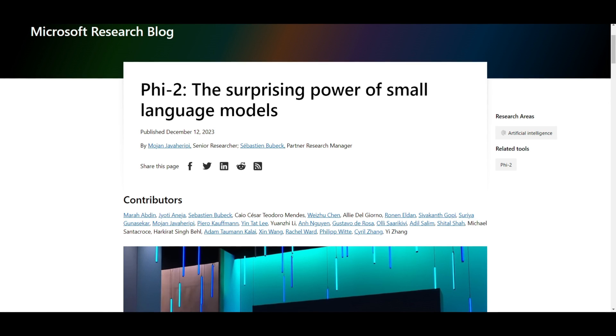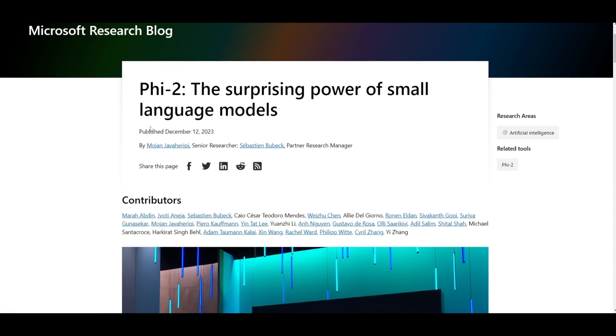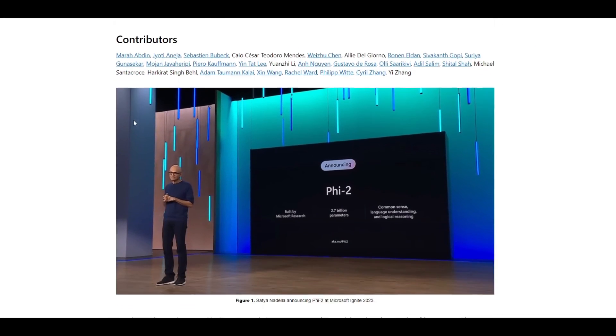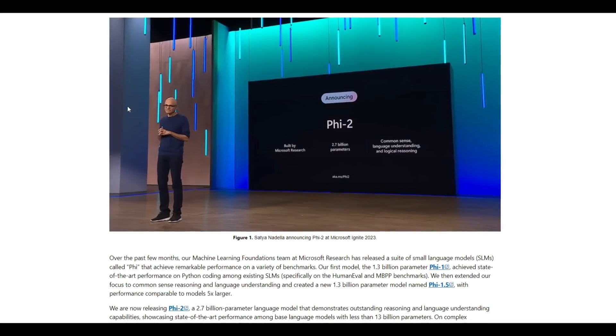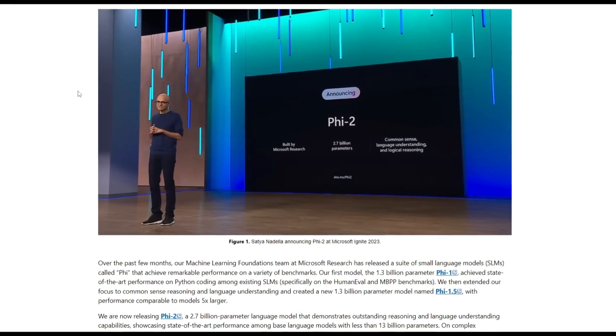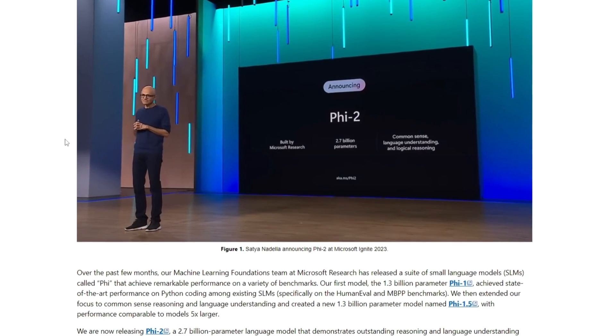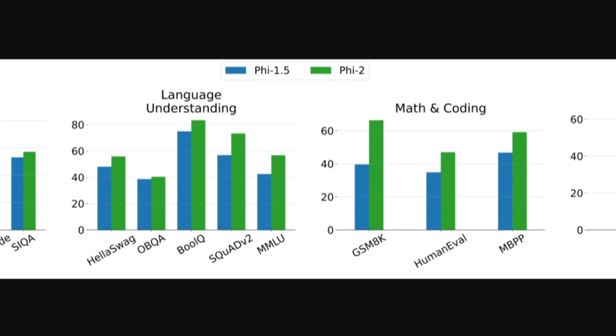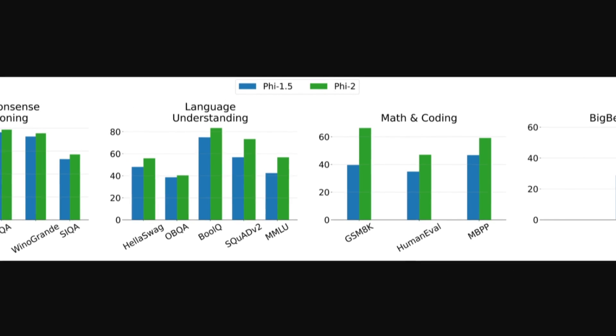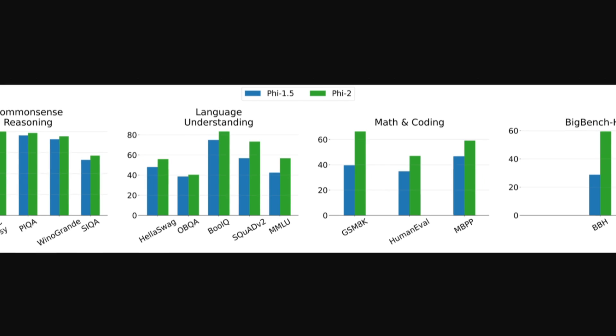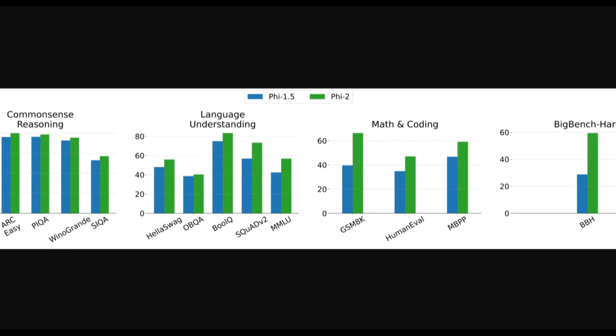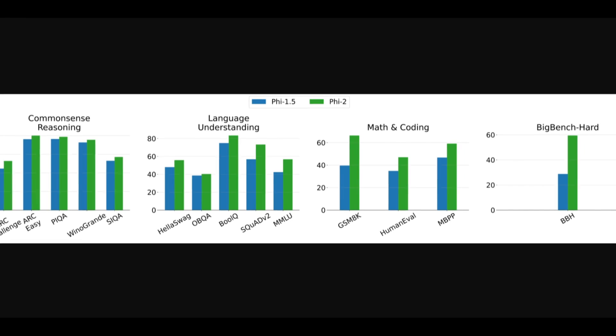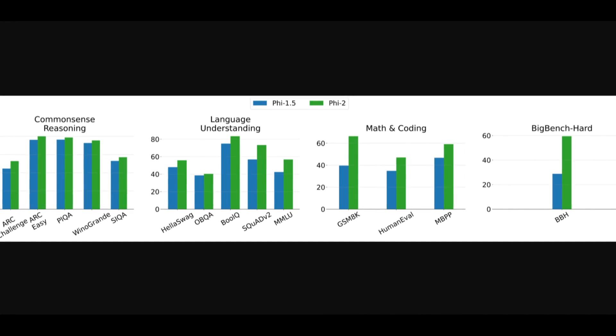Now they've released Phi-2, a 2.7 billion parameter large language model showcasing outstanding reasoning and language understanding capabilities. Phi-2 performs exceptionally well on complex benchmarks, matching or even outperforming models up to 25 times larger. This success is attributed to innovation in model scaling and training data curation. The researchers explored whether they could achieve advanced language model abilities on a smaller scale, making strategic choices during the training process and selecting specific data to replicate a larger model.